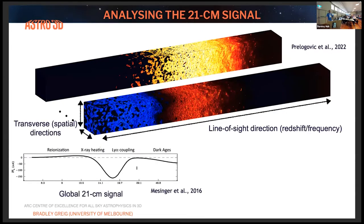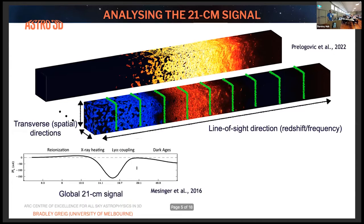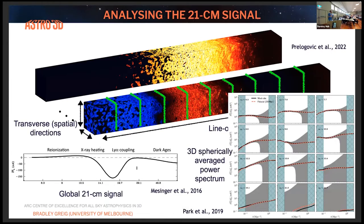We have global experiments which aim to reduce the sky signal down to one number and measure that along the line of sight direction — this is what the global signal of the brightness temperature looks like. With interferometer experiments, we take this 3D light cone, break it up into individual boxes, and each box measures a power spectrum of the brightness temperature fluctuations, encoding the evolution of the brightness temperature all the way through the universe.